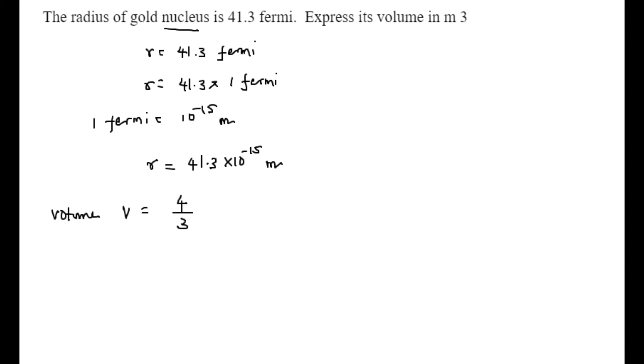So v is equal to 4 by 3 pi r cube, which equals 4 by 3 times 3.14 times 41.3 into 10 power minus 15 in the whole cube. After multiplying the numerator and denominator, I am getting a very big value with the power of 10 power minus 45 and divided by 21, because here I am considering 3.14 as 22 by 7.